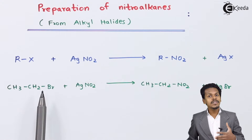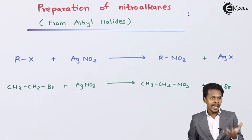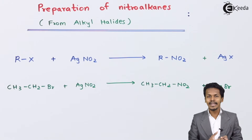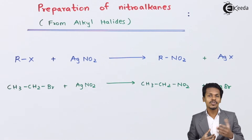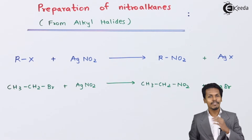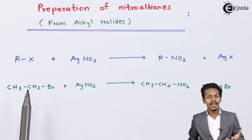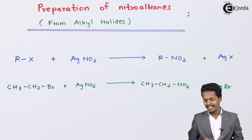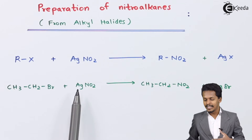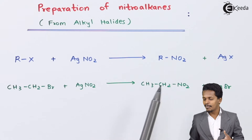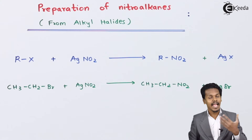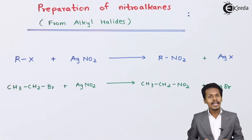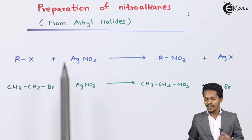We can use alkyl bromide or alkyl iodide for this reaction. Using alkyl chloride gives a very slow reaction, which is why we prefer alkyl bromide or alkyl iodide. Reacting these with AgNO2 gives a fast reaction with a higher yield of nitroalkane.